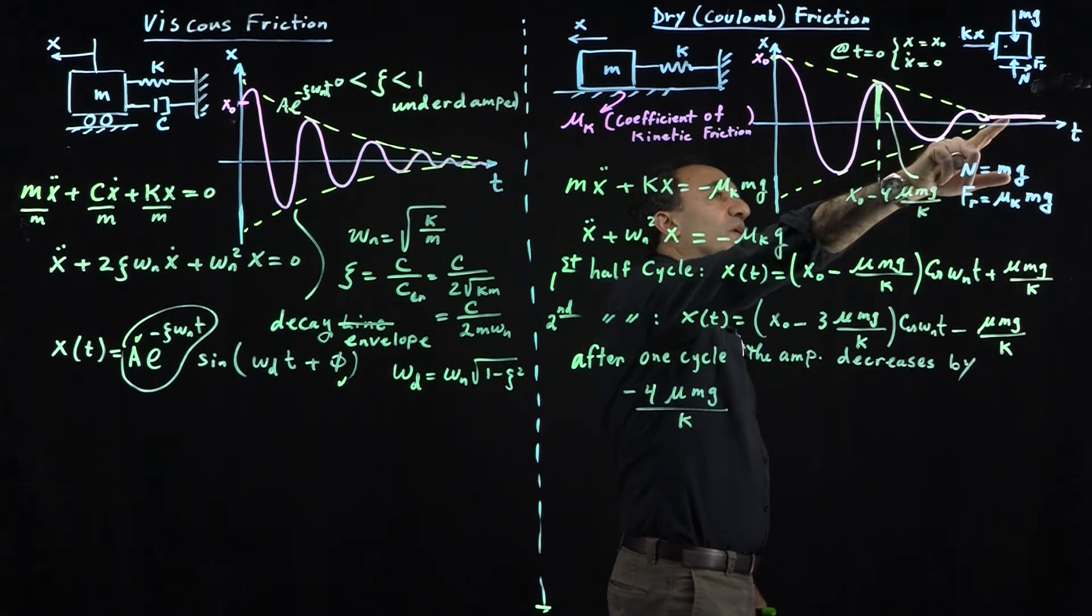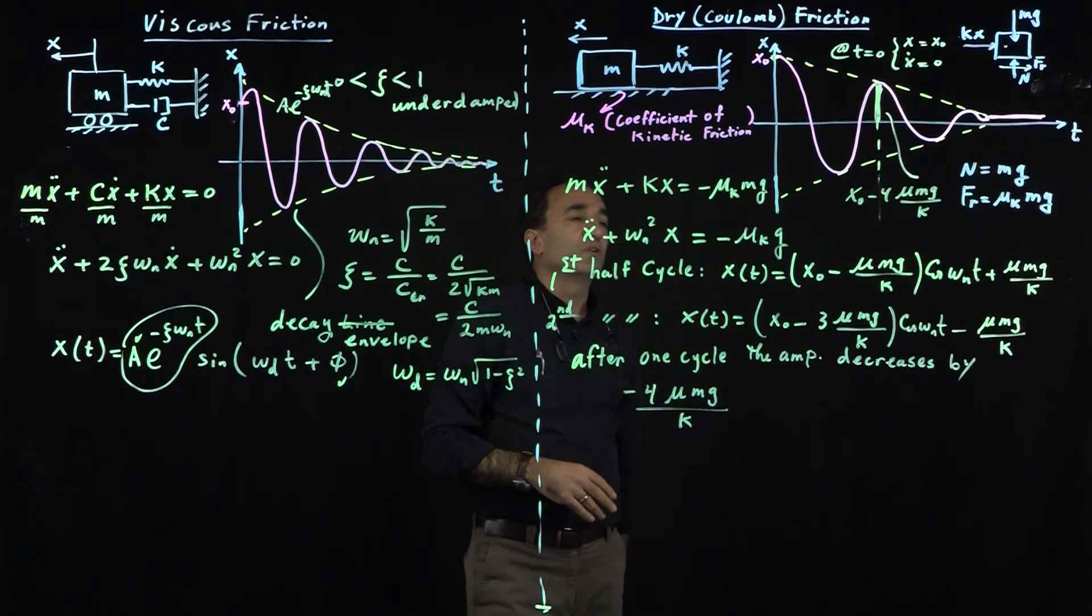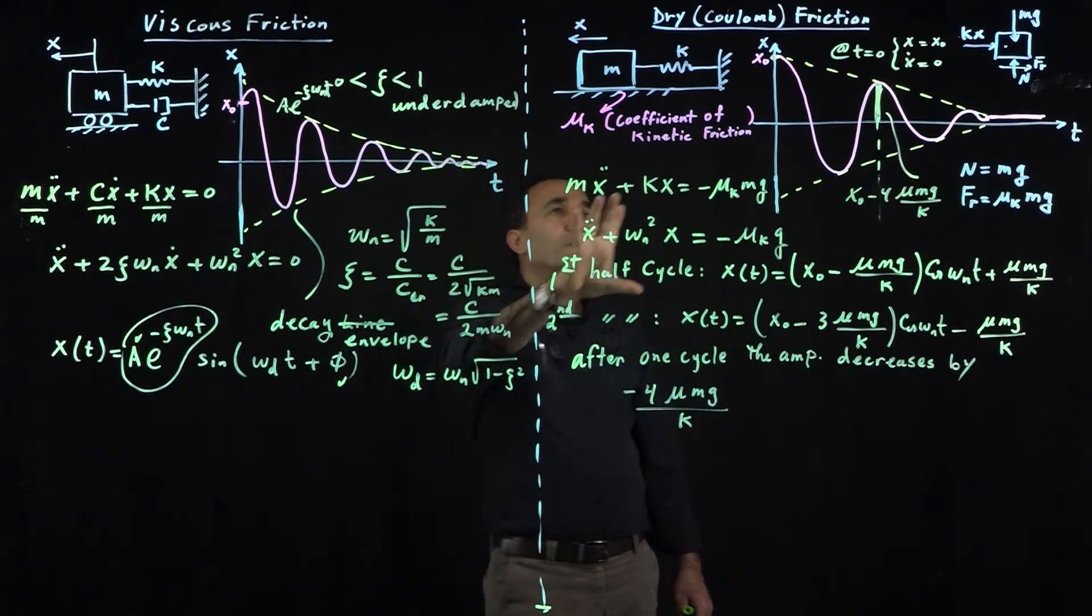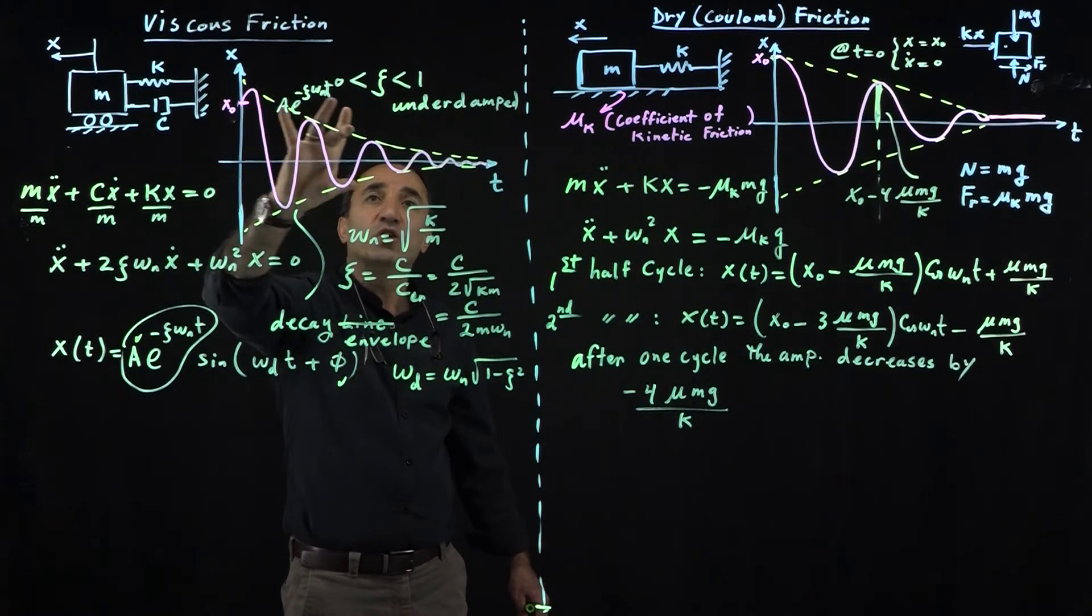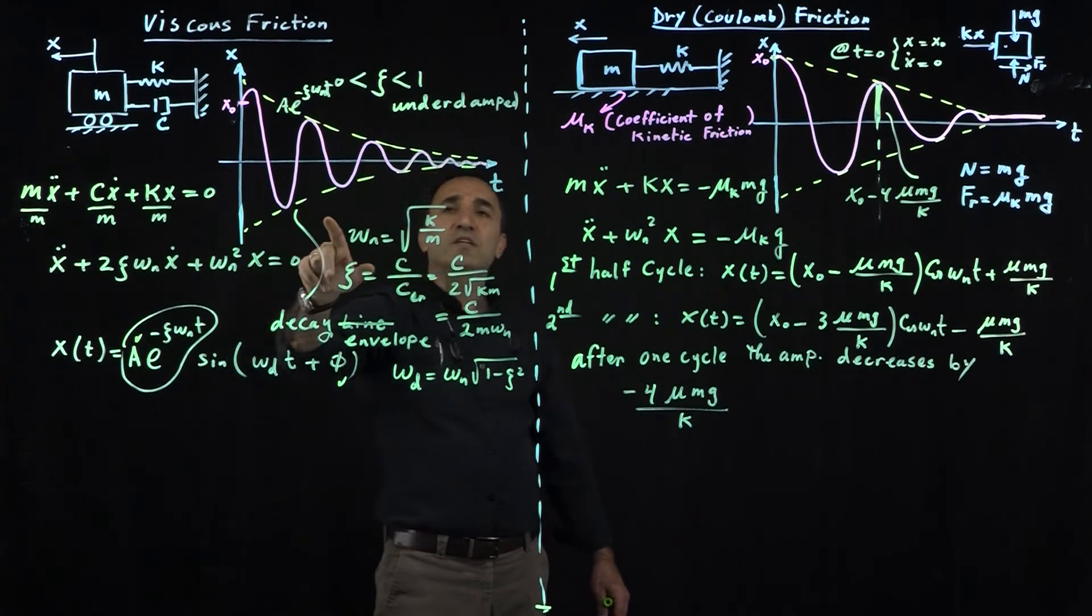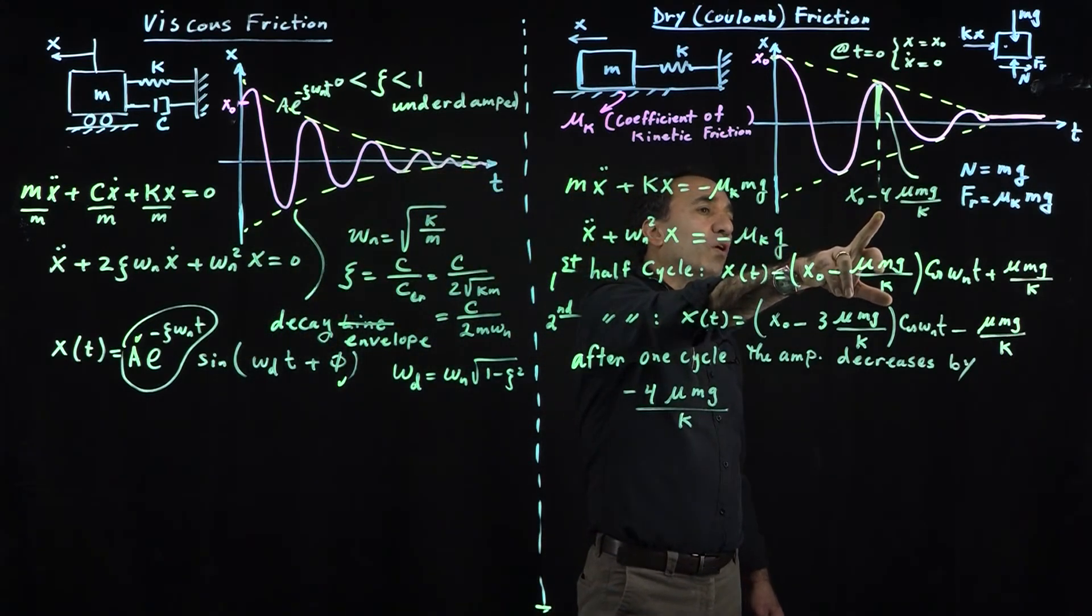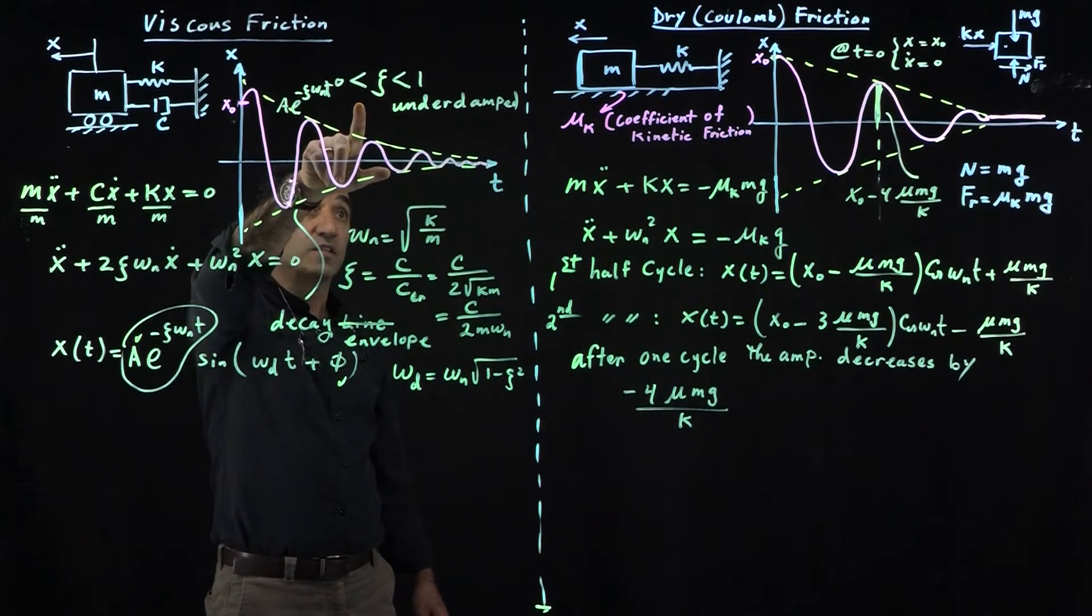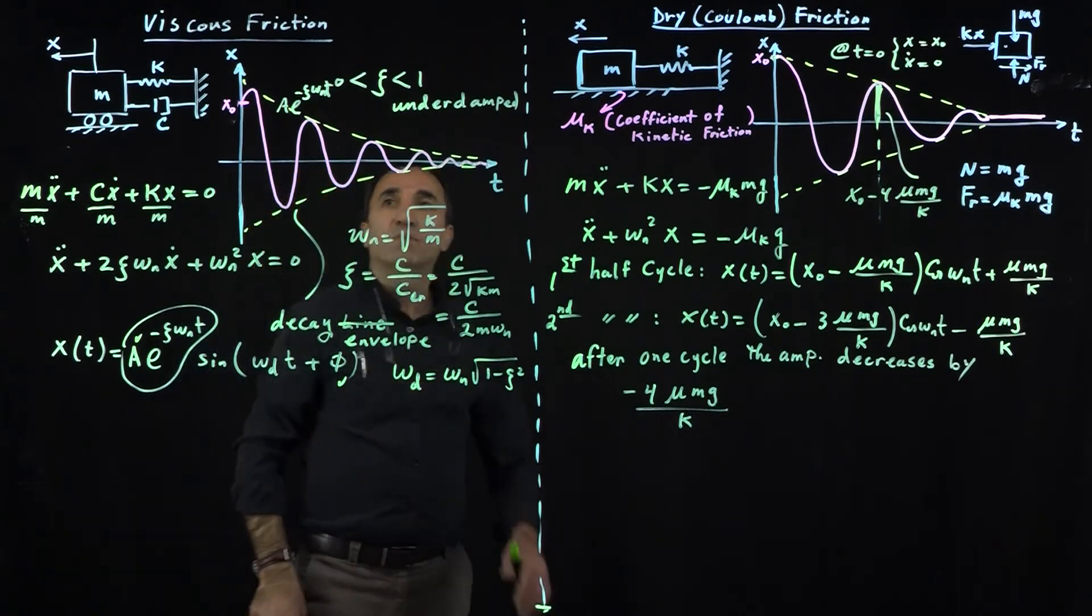This is where it comes to rest, where that line becomes horizontal. This is a linear change in the amplitude; this is an exponential change. The other thing is that this system's natural frequency is not altered, omega_n here. For this underdamped case, you do have a damped frequency.